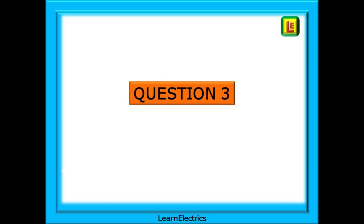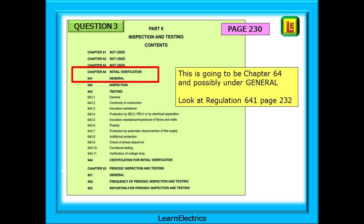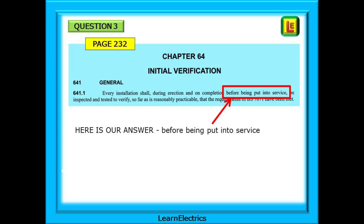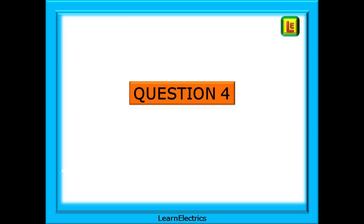Question 3: how often should an initial verification be carried out on an installation? Looking at page 230, initial verification is chapter 64, and it might be a good idea to start our search in the general section, Regulation 641. Going to page 232, here is Regulation 641.1 — before being put into service. Now we can choose our answer from the choices offered. Choose answer A.